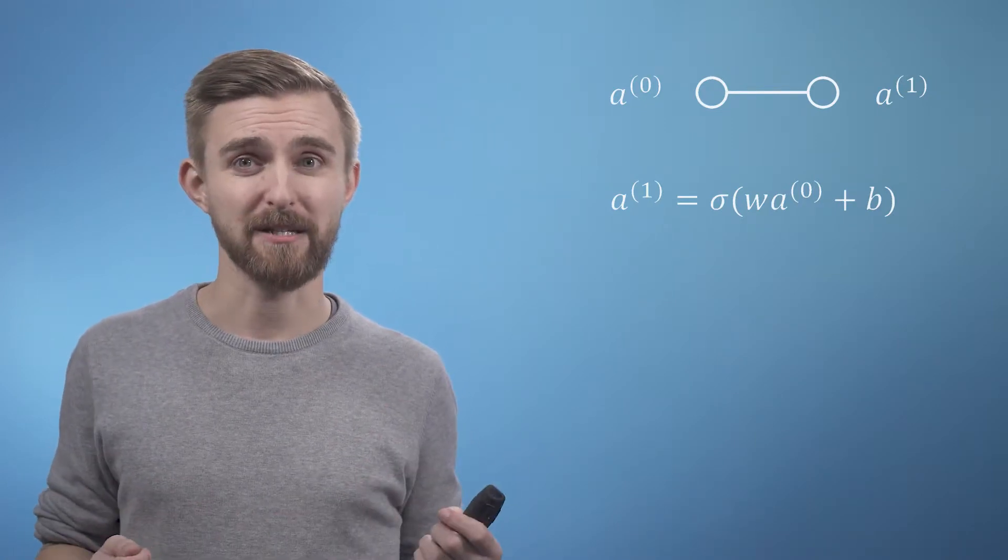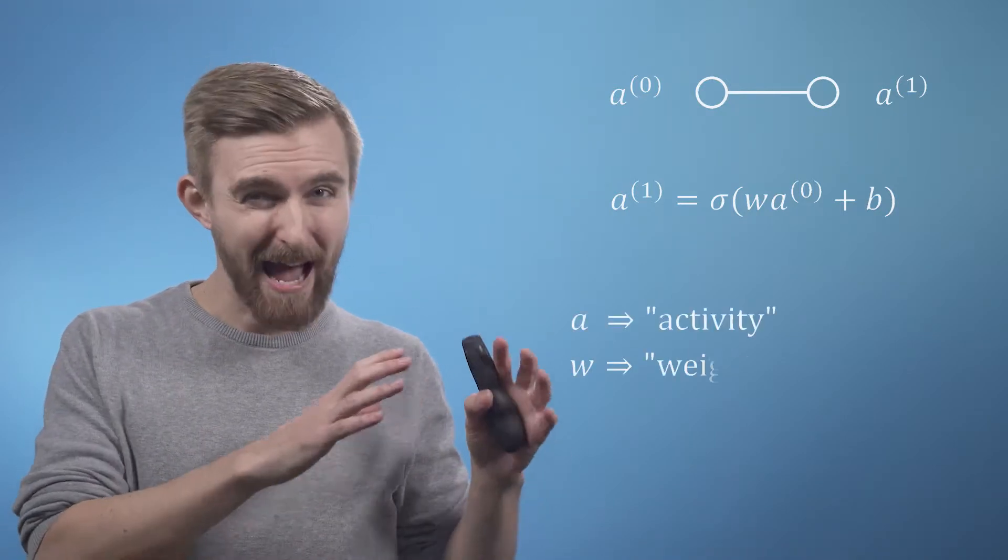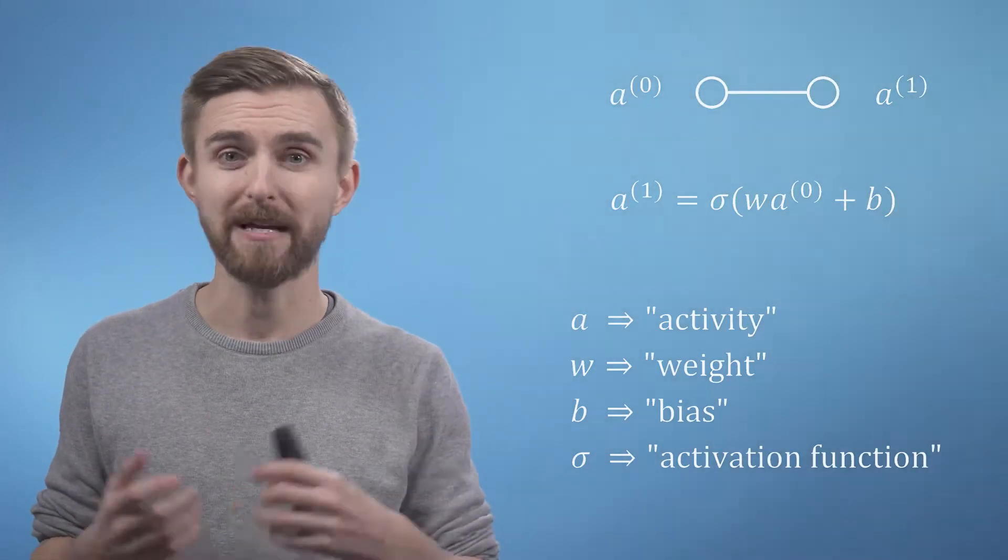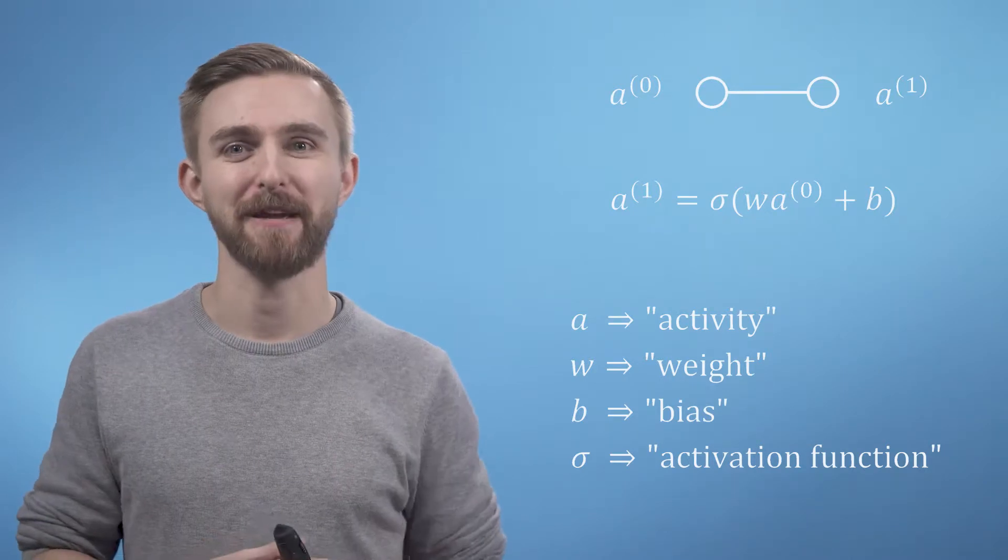It's useful at this point to give each of these terms a name as it will help you keep track of what's going on when things get a bit more complicated. So our a terms are called activities, w is a weight, b is a bias, and sigma is what we call an activation function.